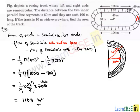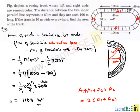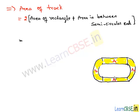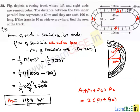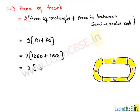Total area of the track = 2 × A1 + 2 × A2 (two rectangles plus two semicircular end regions) = 2 × (1060 + 1100) = 2 × 2160 = 4320 m². This is the area of the track, completing our solution.